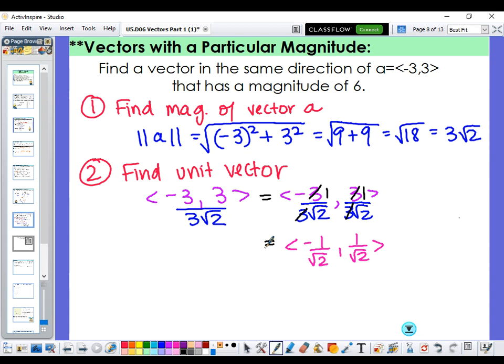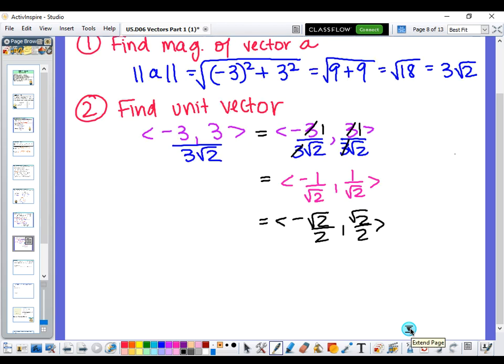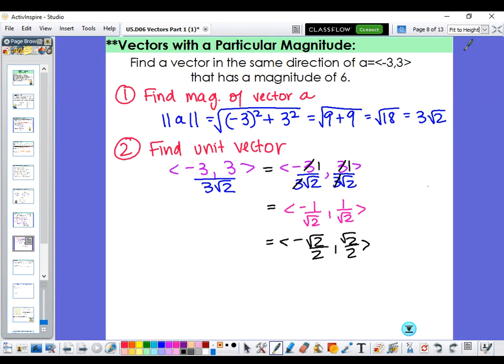I'm going to go ahead and rationalize as well to get my unit vector. I've got negative square root of 2 over 2, positive square root of 2 over 2. Which, hey, that is a coordinate on the unit circle. So we know, in fact, that this really does have a magnitude or a length of 1.